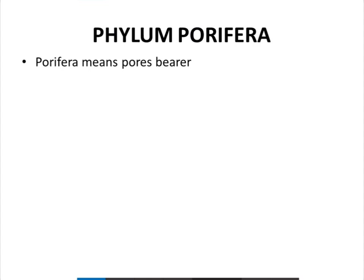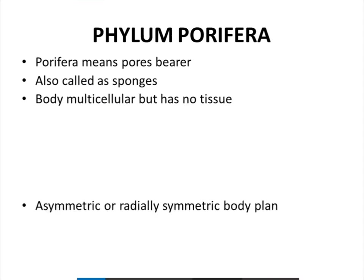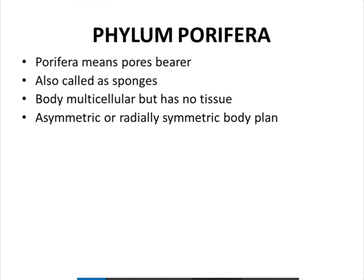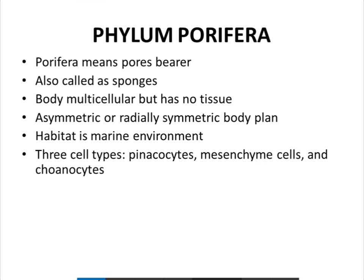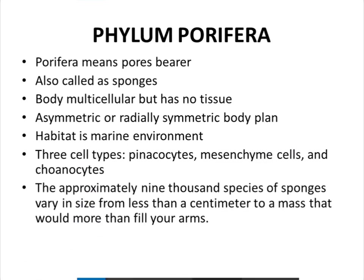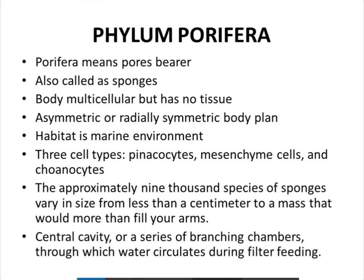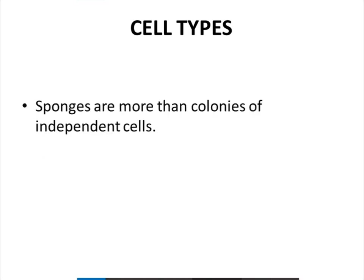Porifera means pore bearers, also called sponges. Their body is multicellular but has no tissues, and they are asymmetric or radially symmetric — meaning there is no symmetry, or if symmetry is present, it is radial symmetry. The habitat is the marine environment. Approximately 9,000 species of sponges vary in size from less than a centimeter to a mass that would more than fill your arms. The central cavity, through which water circulates during filtration feeding, is called the spongocoel.